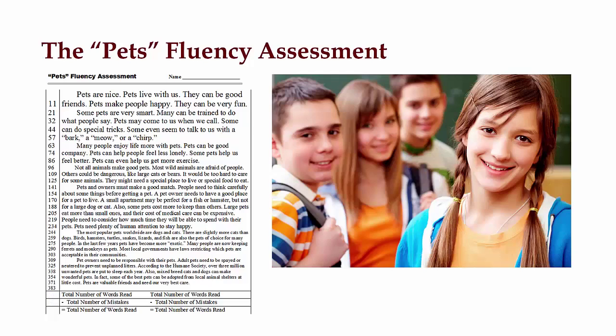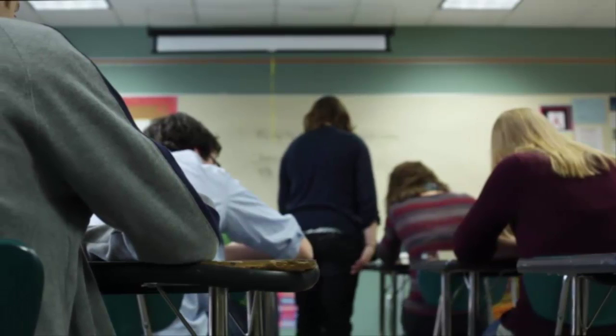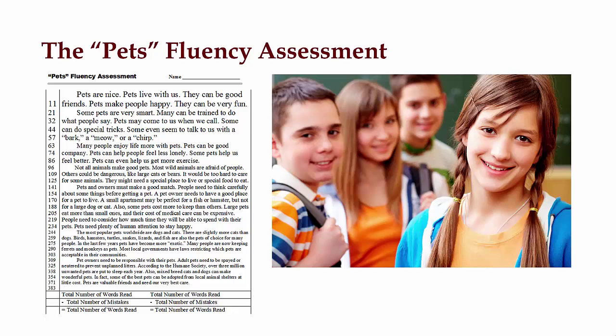The PETS Fluency passage is leveled in a unique pyramid design. Of the seven paragraphs, the first paragraph is at the first grade reading level, the second at the second grade reading level, the third at the third, fourth at the fourth, fifth at the fifth, sixth at the sixth, and the seventh paragraph is at the seventh grade reading level. Thus, the reader begins the assessment at an easier level, which builds confidence and then moves to more difficult academic language through successive approximation. As the student reads the fluency passage, the teacher will be able to note the reading levels at which students have a high degree of accuracy and automaticity.